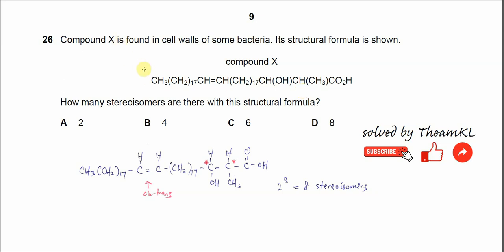Question 26. Compound X is found in the cell walls of some bacteria. Its structural formula is shown here. How many stereoisomers are there with this structural formula?